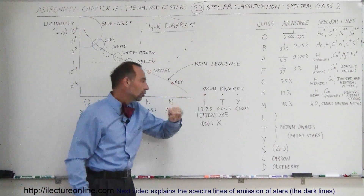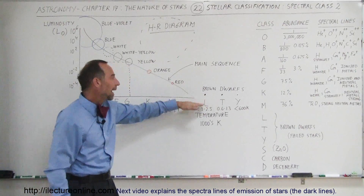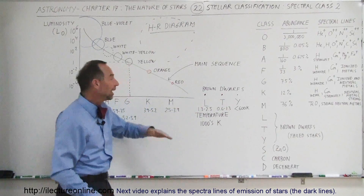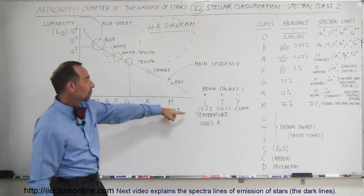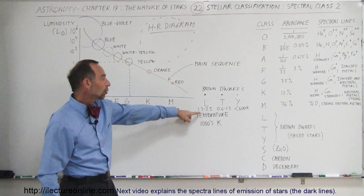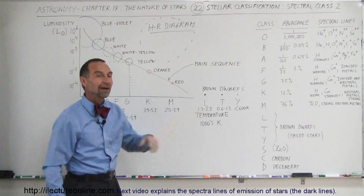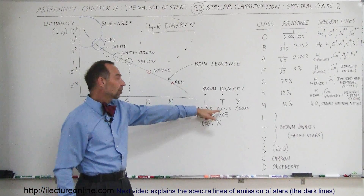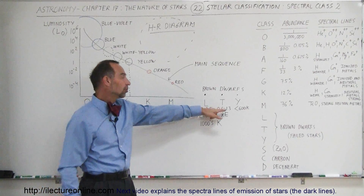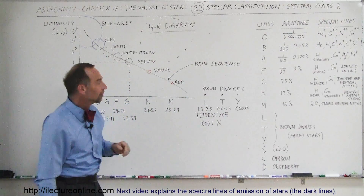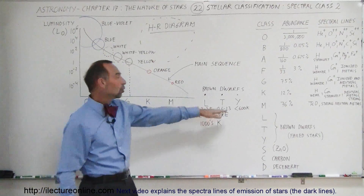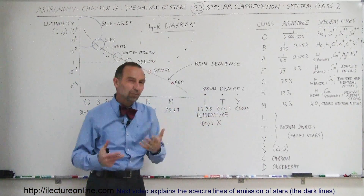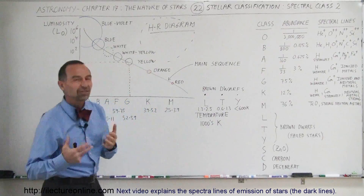There are three different classes of brown dwarfs: we call them the L, the T, and the Y brown dwarfs. The temperature for the L-type is from 1,300 to 2,500 Kelvin. For the T-class it is from 600 to 1,300 degrees Kelvin. And finally, the Y brown dwarfs have temperatures of less than 600 Kelvin.